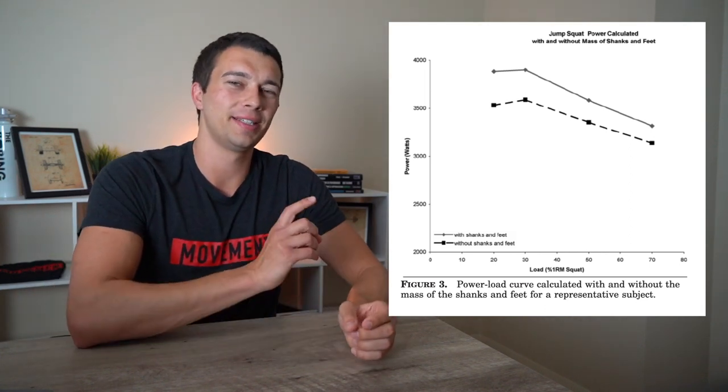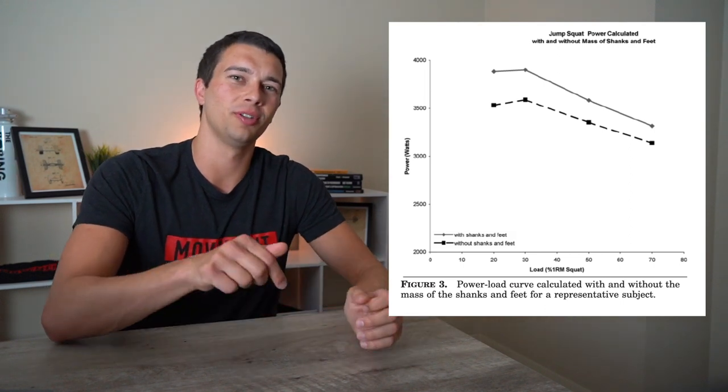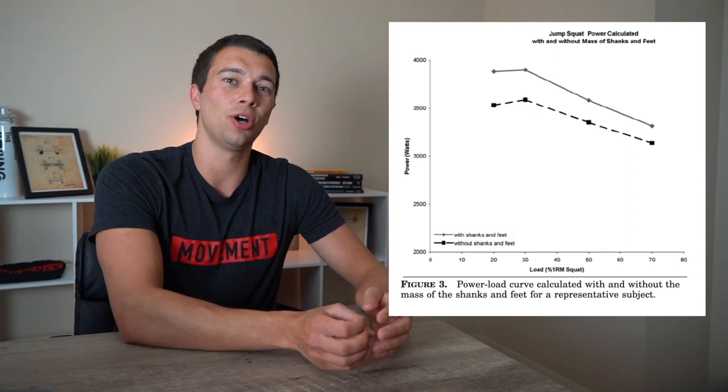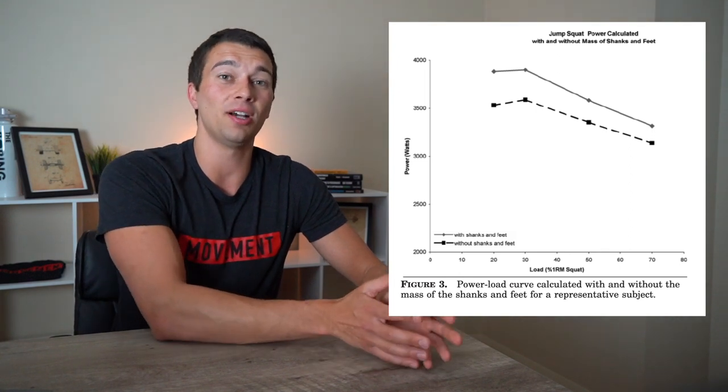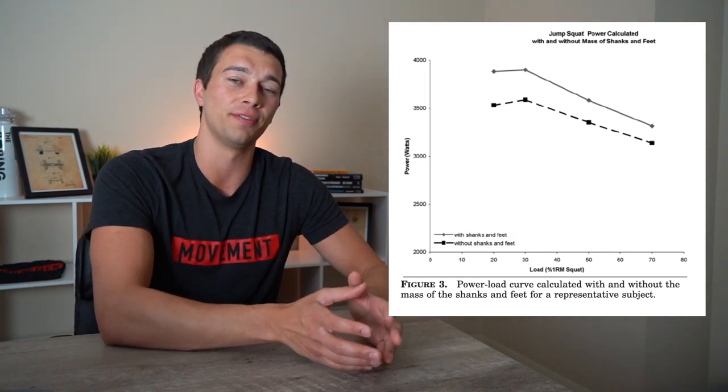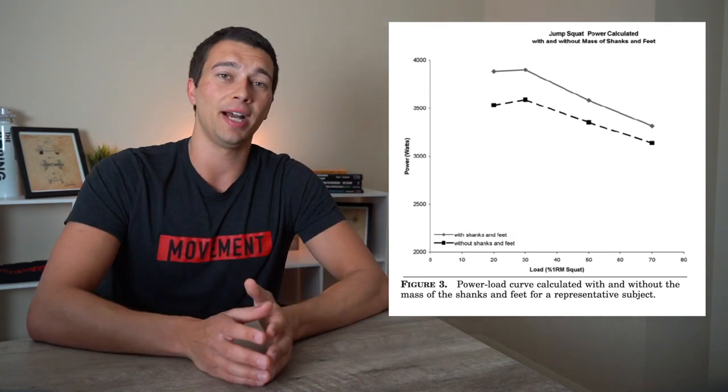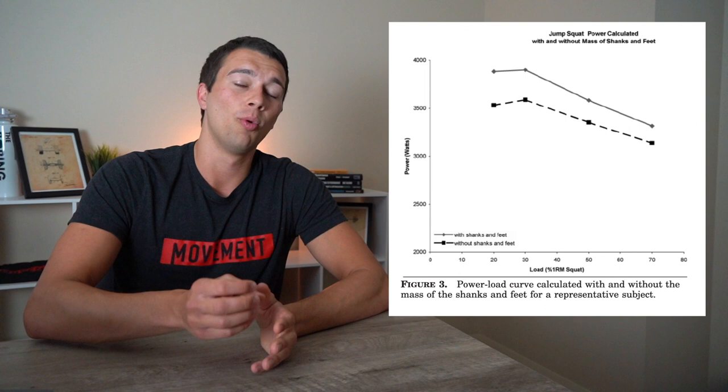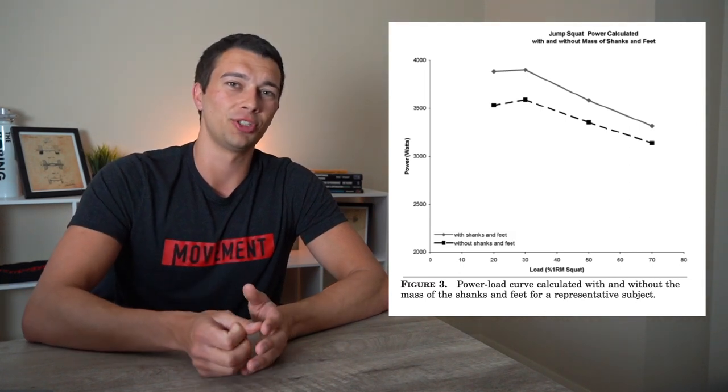And one thing you can't necessarily see from just this chart, but if you read the whole research article linked below, weaker athletes tend to see a lower percent of one rep max being optimal for power generation. Whereas stronger athletes tend to see closer to that 50% or 40% one rep max type of load be optimal for power generation.